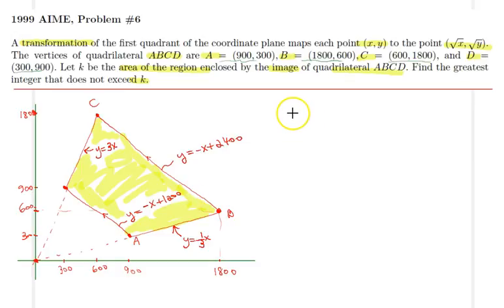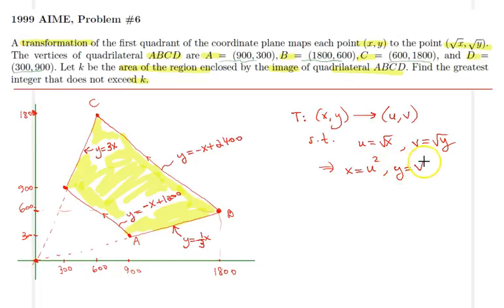We are told that the transformation T takes the point (x, y) and maps it to the point (u, v) such that u = √x and v = √y. So with a simple squaring, this implies that x = u² and y = v².